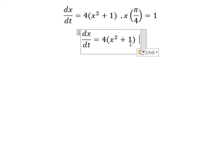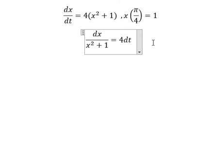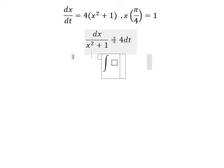We put x squared plus one to the left, dt we put on the right. Next we put the integration for both sides.